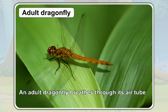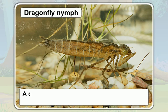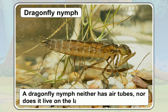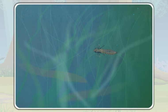An adult dragonfly breathes through its air tubes on land. But a dragonfly nymph neither has air tubes nor does it live on the land. Have you ever wondered how a dragonfly nymph breathes in water? Like a fish, a dragonfly nymph has gills. In water, it breathes through its gills. A dragonfly nymph has gills at the end of its anus.